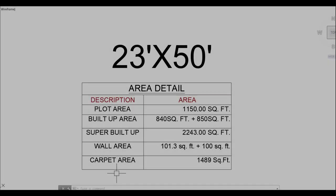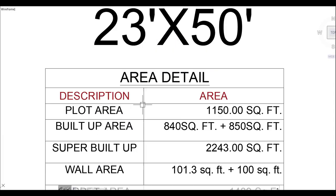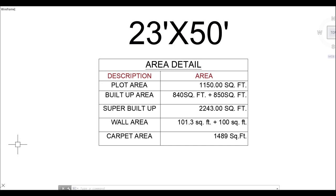Now let's go to our ground floor plan. First of all, we will get the plot area. When we buy any plot, the overall area including where the beams are located is called the plot area. We will minus the plot area and what remains is called the super built-up area.